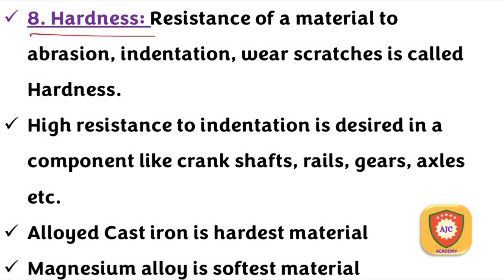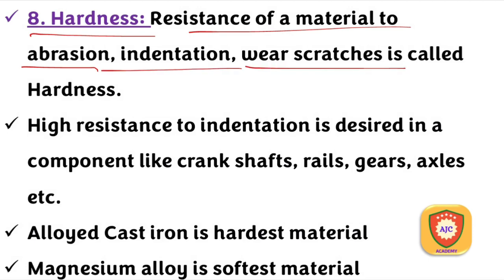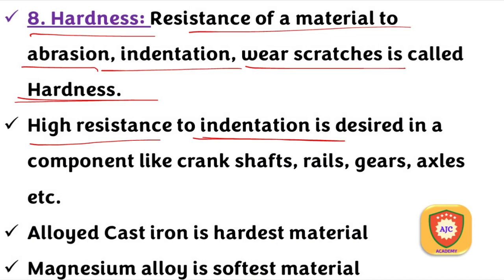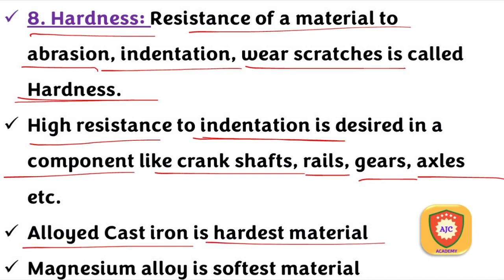Hardness is the resistance of a material to abrasion, indentation, and scratches. High-resistance components like crankshafts, rails, gears, and axles require high hardness. The hardest material is alloyed cast iron, and the softest material is magnesium alloy.